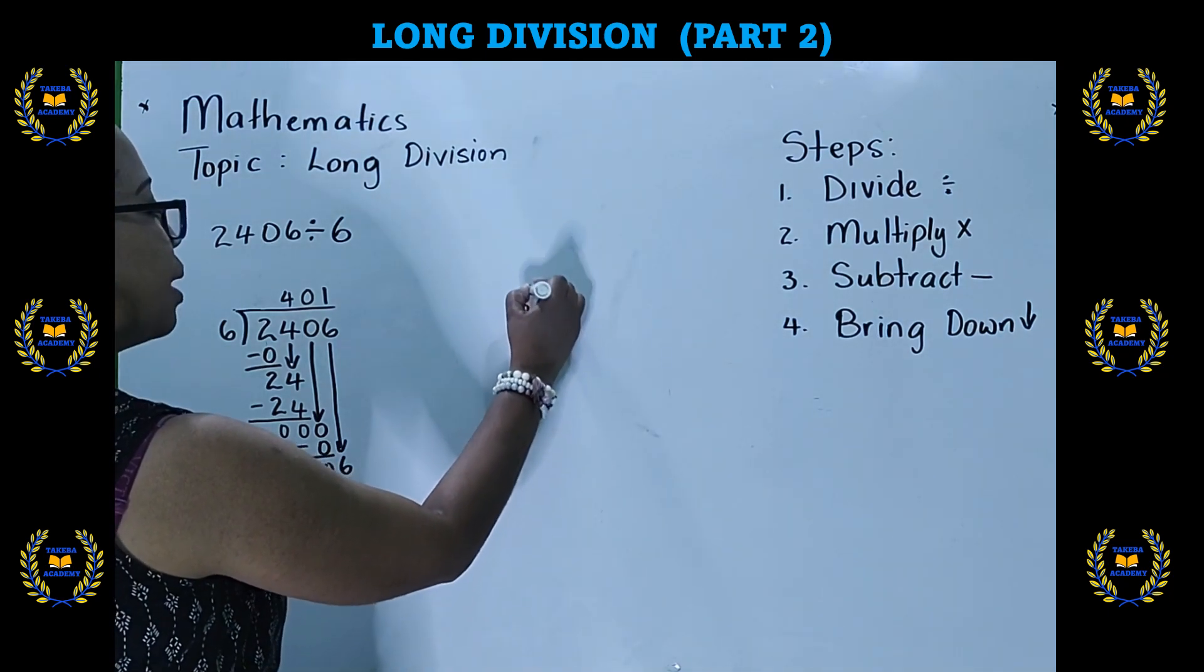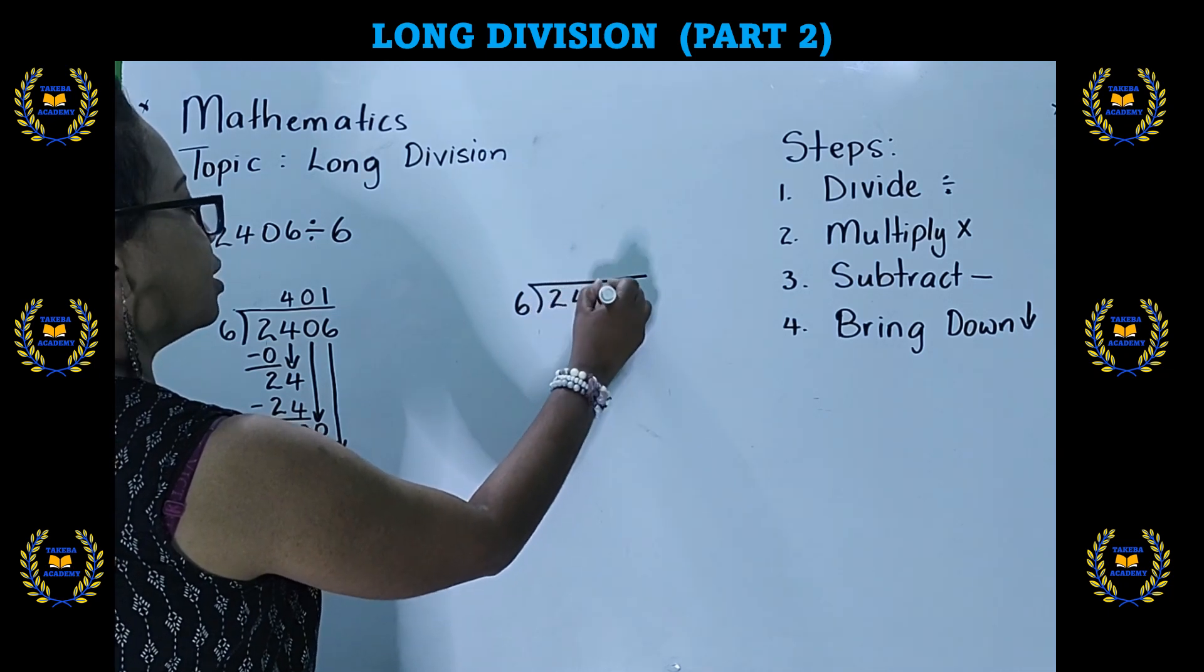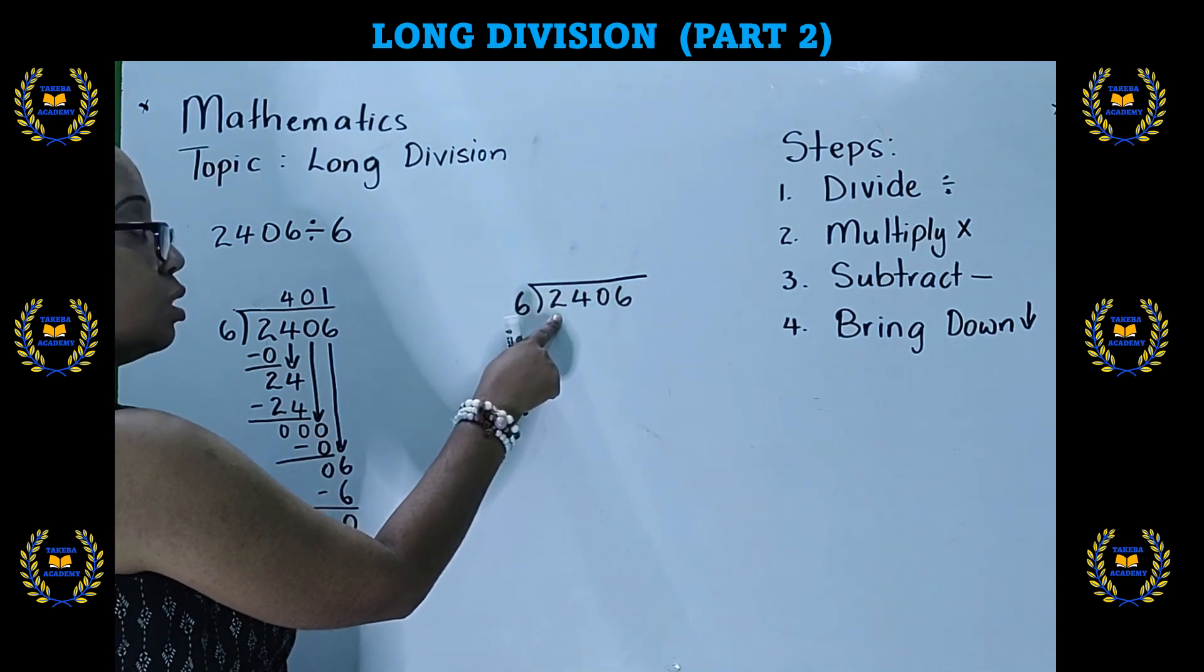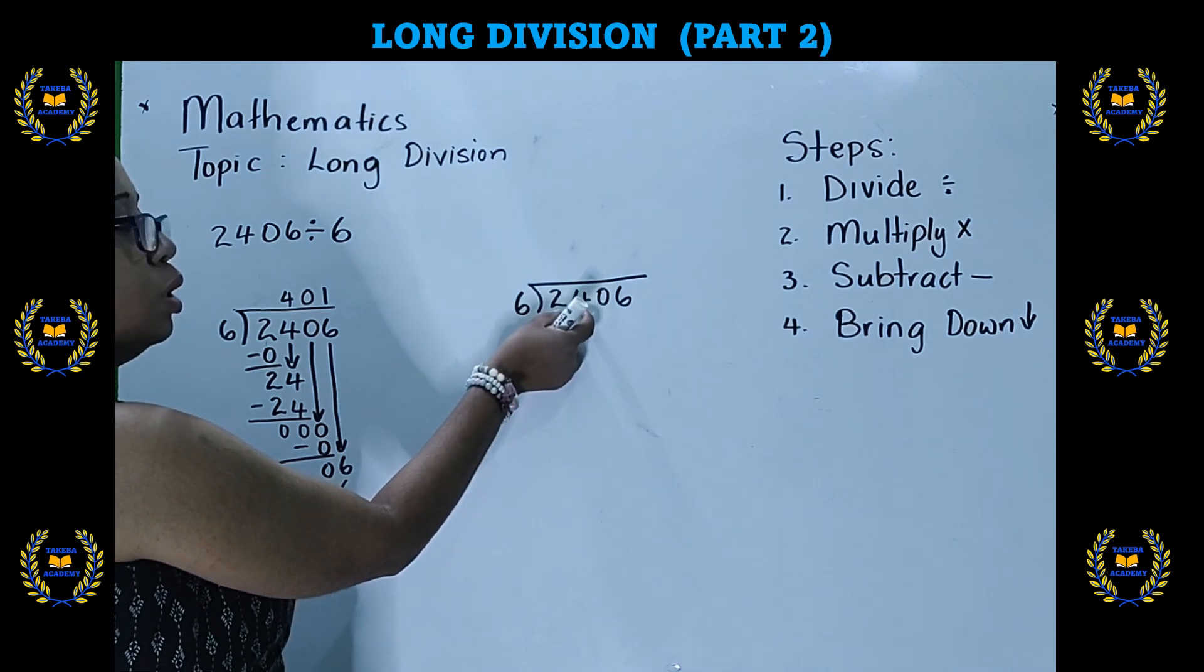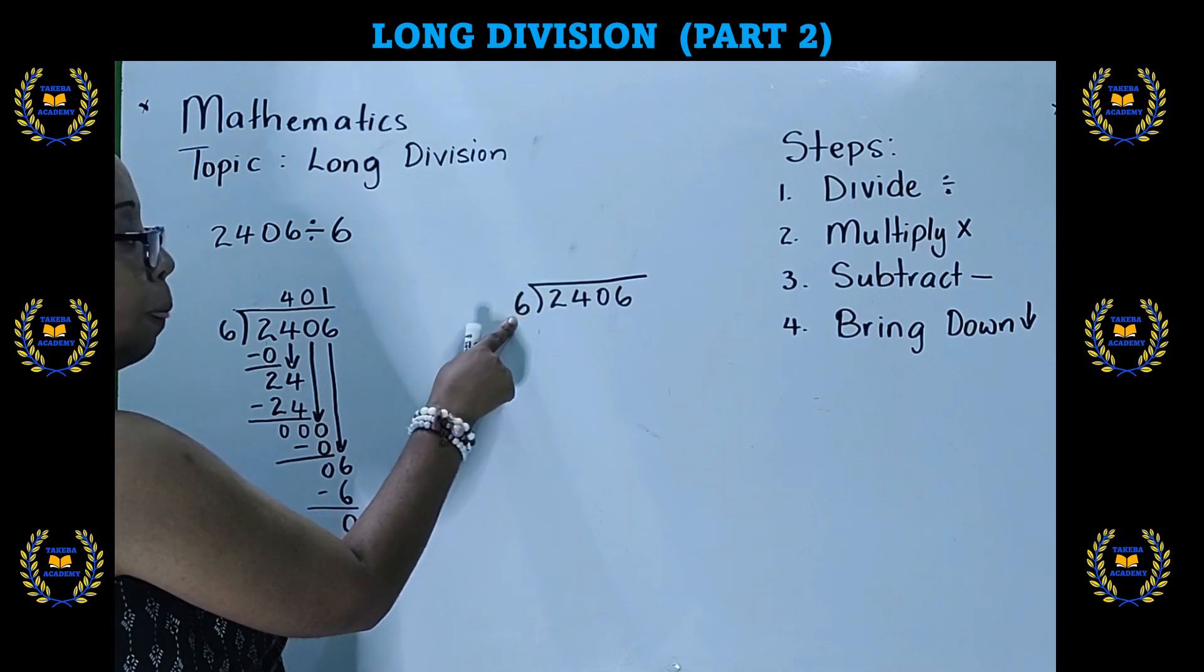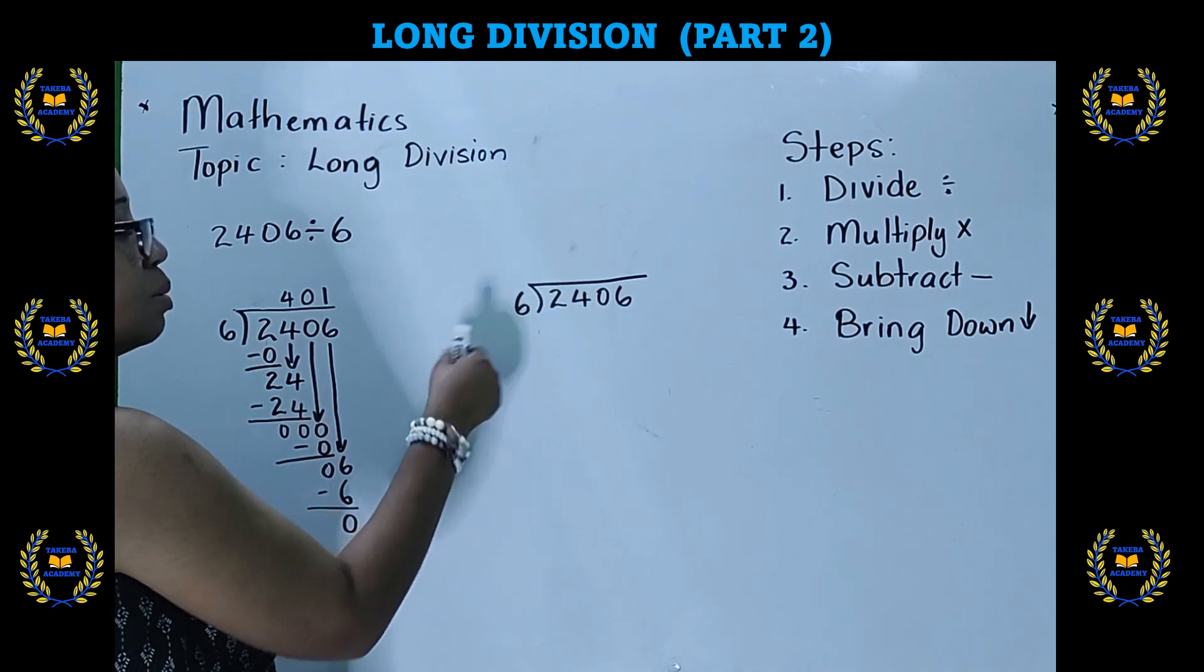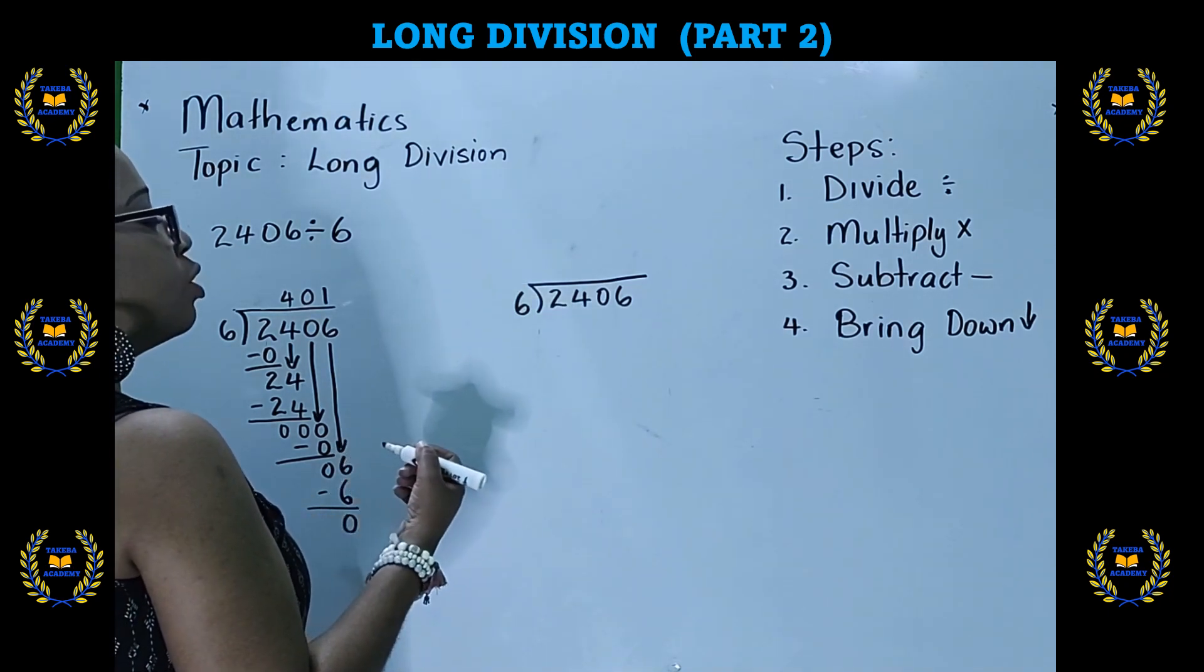So we're still going to do the same example. 2, 4, 0, 6. This is our dividend and this is our divisor. Now, if the first number that you're trying to divide is less than the divisor, then you use two numbers. So instead of trying to divide 2 by 6, we divide 24 by 6.